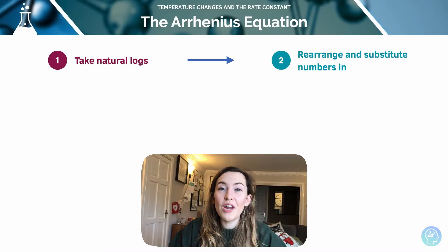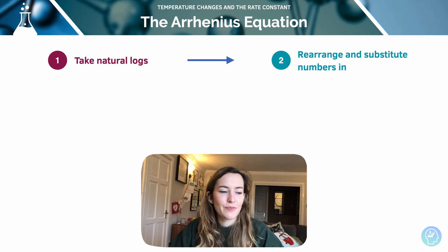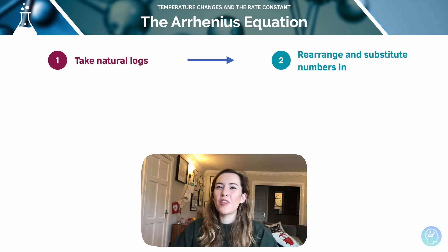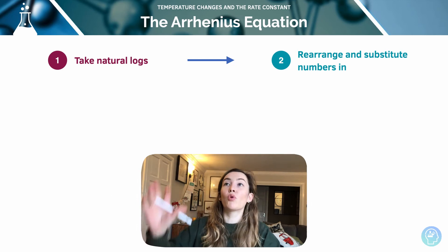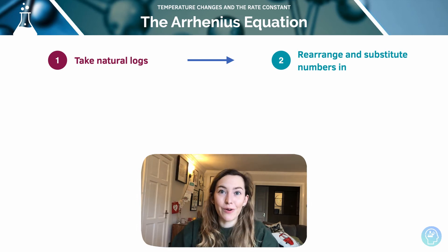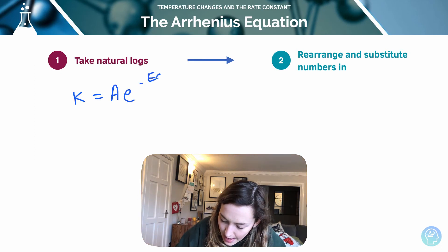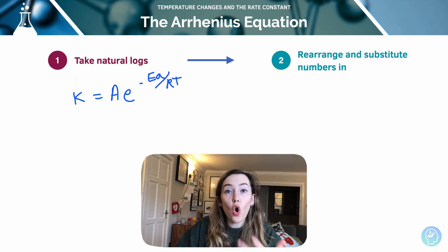Now, we can rearrange the Arrhenius equation to give us any of the unknown values. For example, the rate constant or the activation energy. But for this, we need to be confident with natural logs. So bring those exponential functions down. Let's bring our original equation in then. k equals A times e to the minus Ea over RT. So if I log both sides, I can get rid of this exponential function.